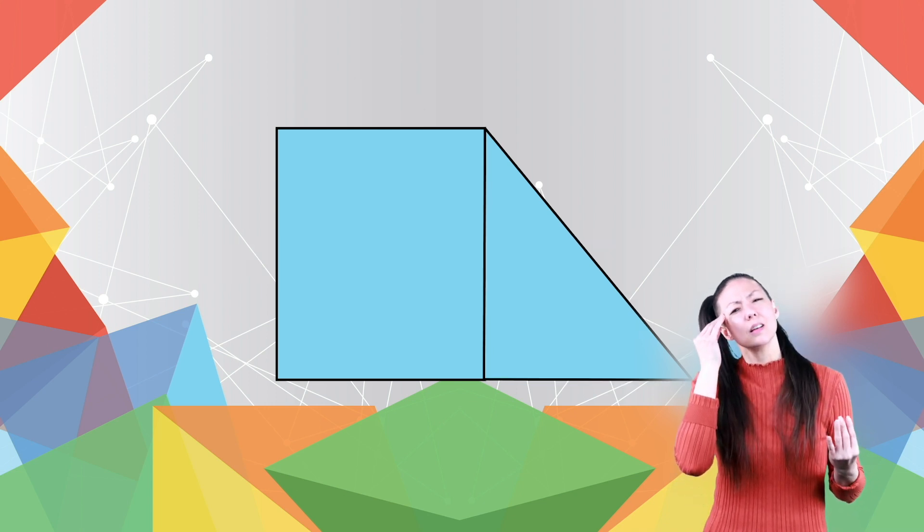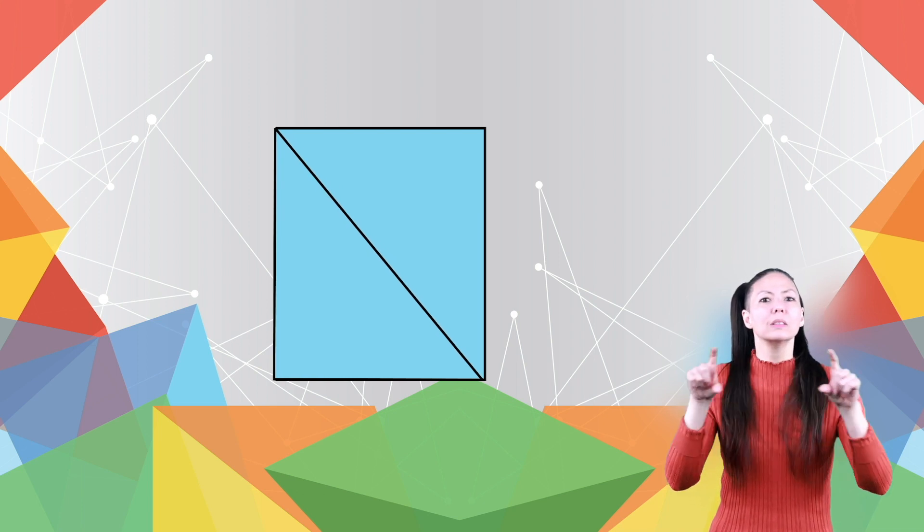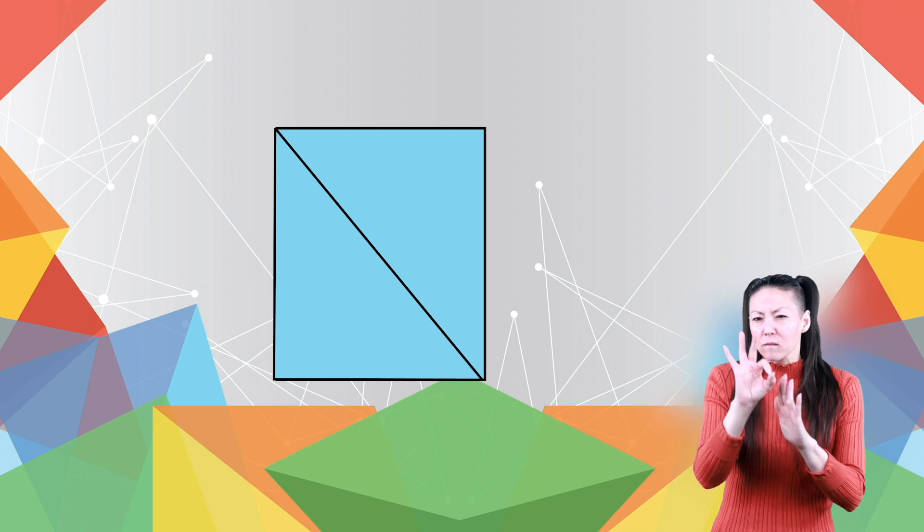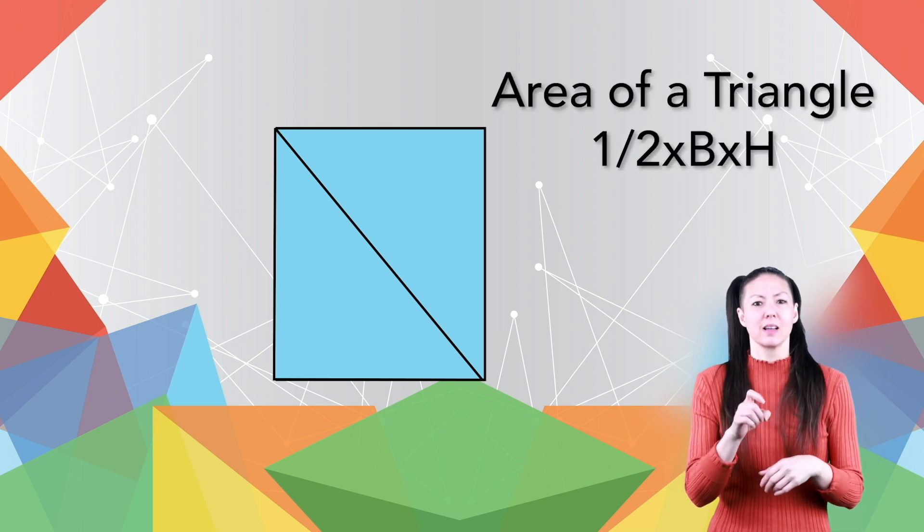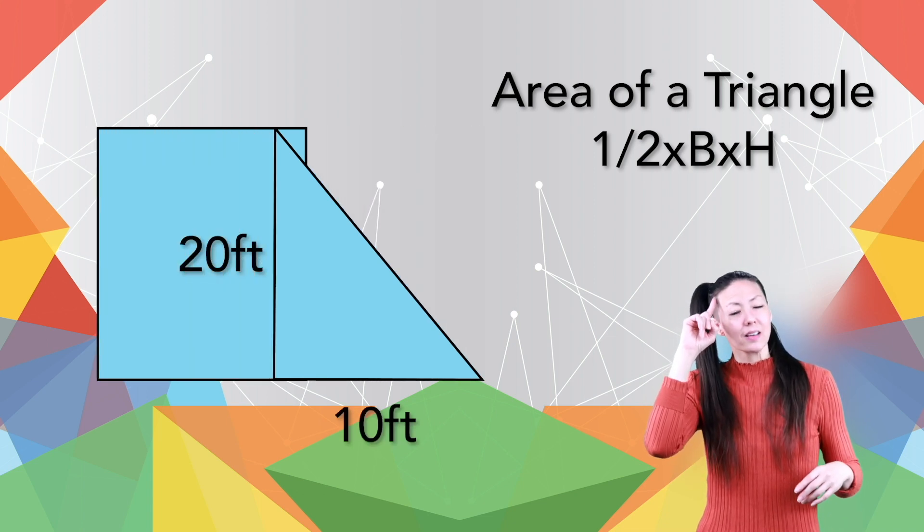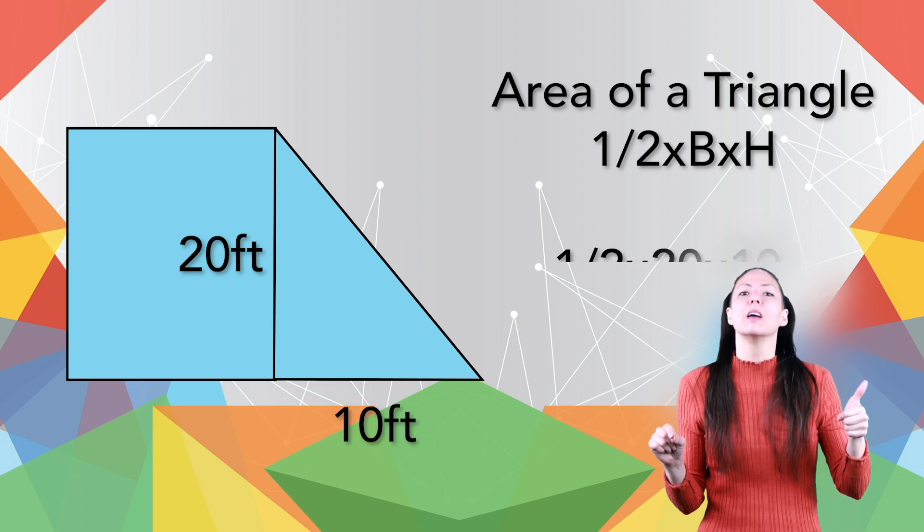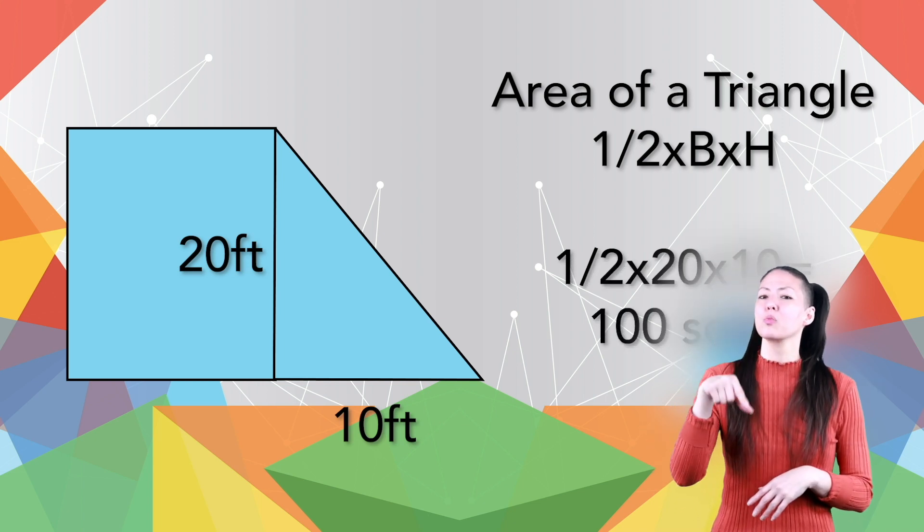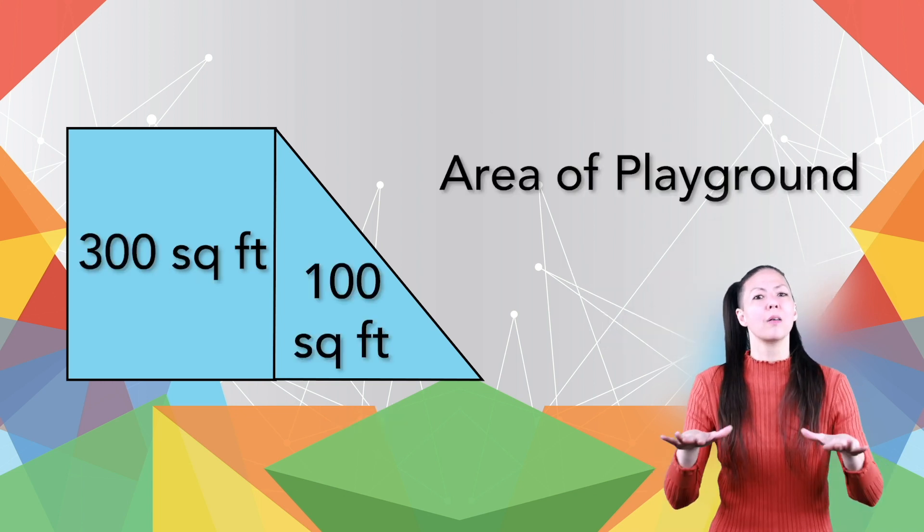If you think about it, a triangle is half a square or rectangle, right? So if you remember that simple fact, you'll quickly memorize the formula for finding its area. It's half the length of the base times the height. Taking our triangle here with a base of 20 and a height of 10, the area would be one half of 20, which is 10, times 10, or 100 square feet. That means the total area of this playground is 300 plus 100, or 400 square feet.